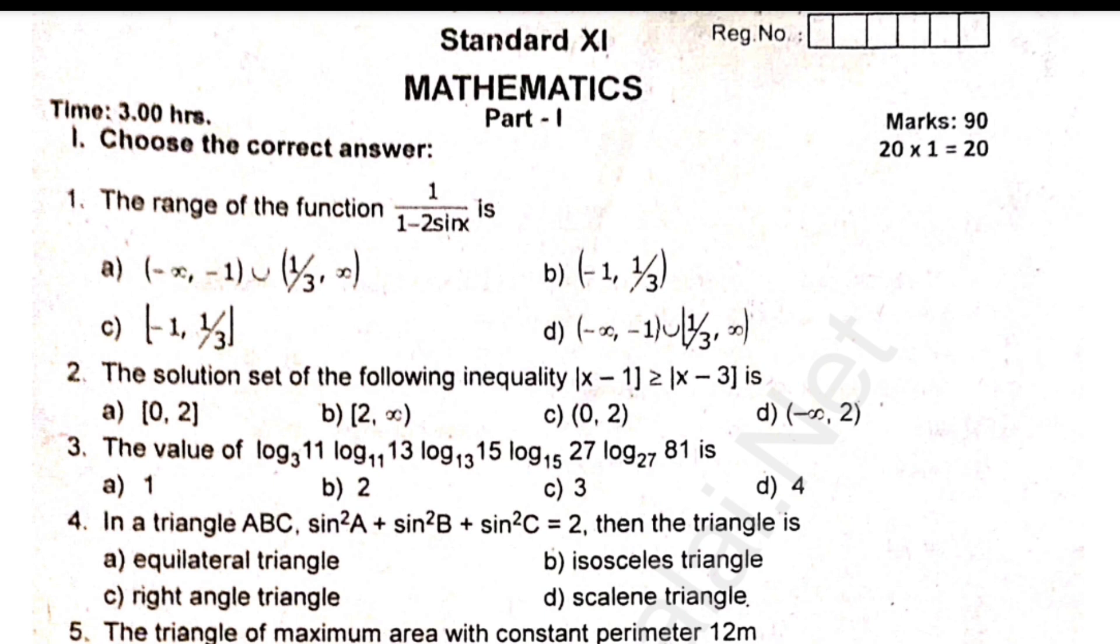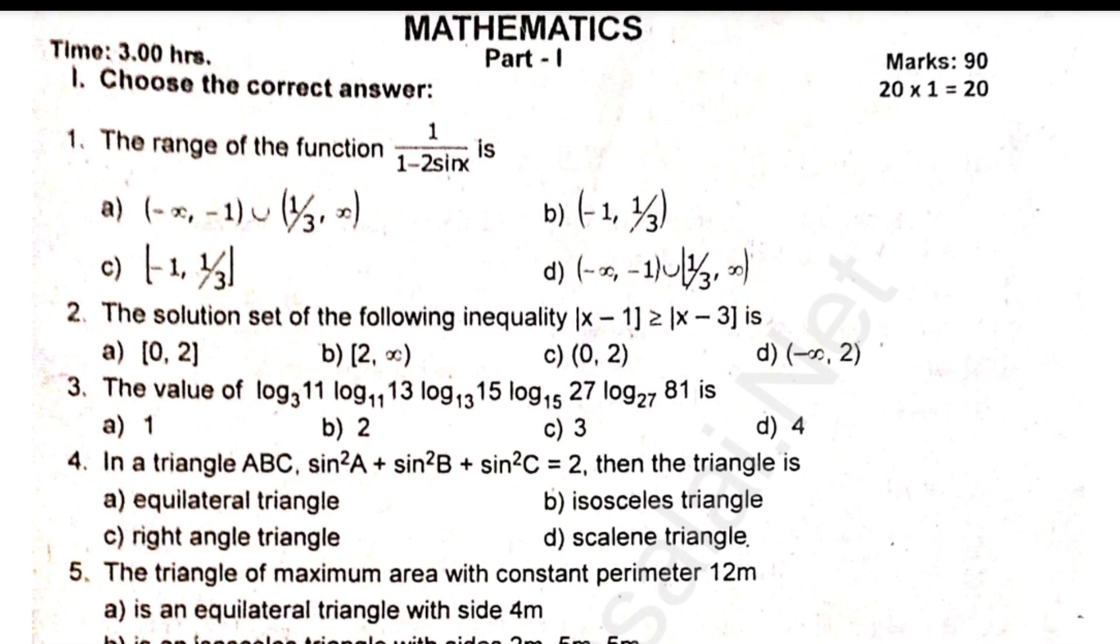For a number of question papers that are 90 marks, you choose 20. Choose the correct answers. Count in the bottom box.